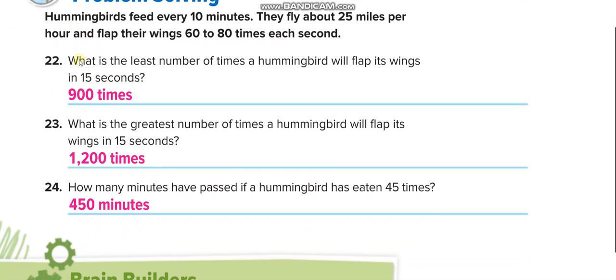First, we need these lines for these three questions. Hummingbirds feed every 10 minutes. They fly about 25 miles per hour and flap their wings 60 to 80 times each second. What is the least number a hummingbird will flap its wing in 15 seconds? So they flap their wings 60 to 80 times each second. So the least number is 60. So to get for 15 seconds, you multiply 60 by 15, which is 900.